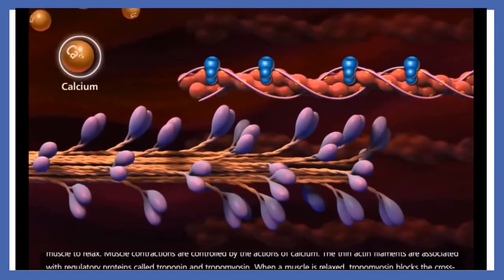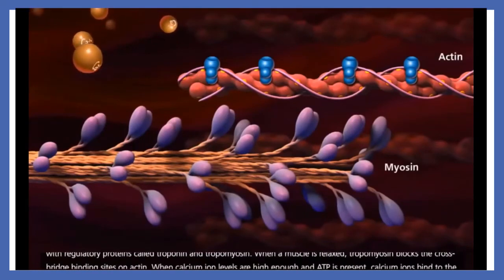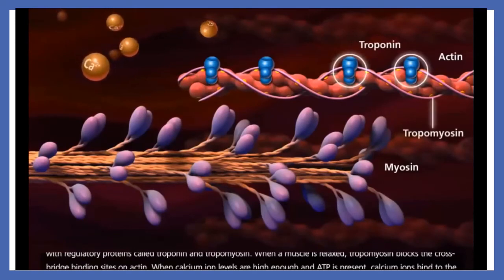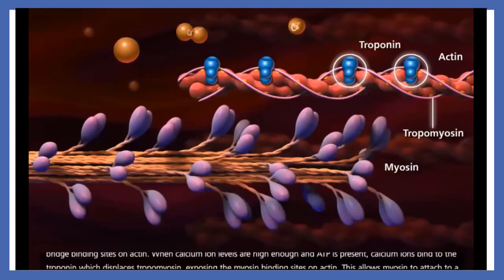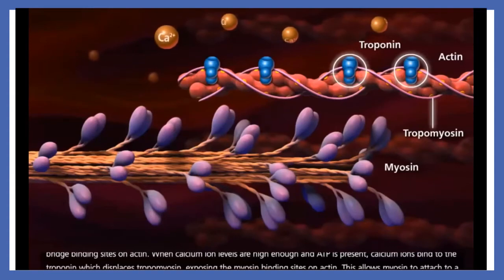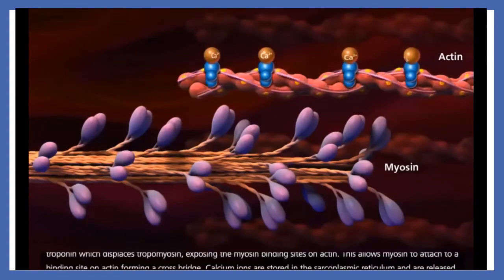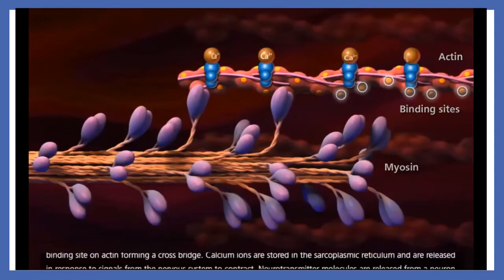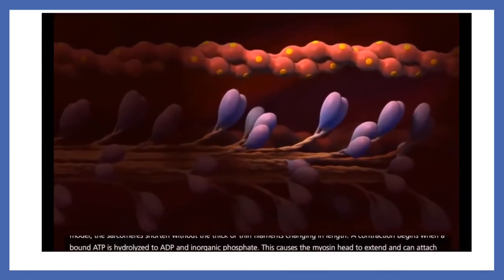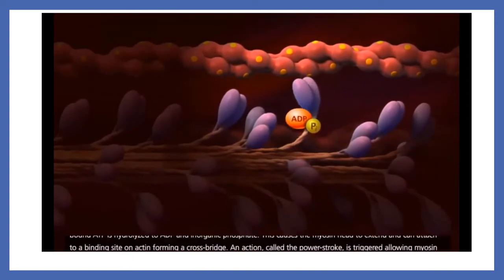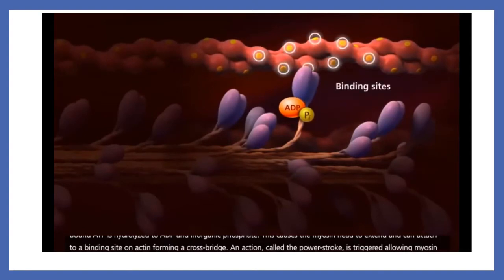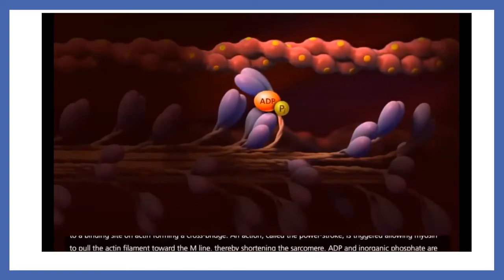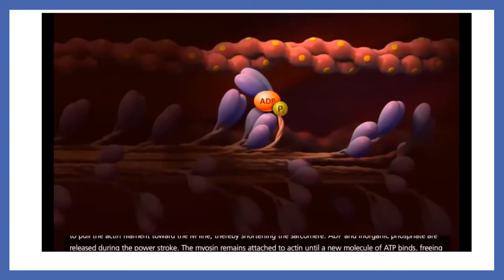Muscle contractions are controlled by the actions of calcium. The thin actin filaments are associated with regulatory proteins called troponin and tropomyosin. When the muscle is relaxed, tropomyosin blocks the crossbridge binding sites on actin. When calcium ion levels are high enough and ATP is present, calcium ions bind to the troponin, which displaces tropomyosin, exposing the myosin binding sites on actin. This allows myosin to attach to a binding site on actin, forming a crossbridge. A contraction begins when a bound ATP is hydrolyzed to ADP and inorganic phosphate, causing the myosin head to extend and attach to actin. The power stroke is triggered, allowing myosin to pull the actin filament toward the M-line, thereby shortening the sarcomere. ADP and inorganic phosphate are released during the power stroke.